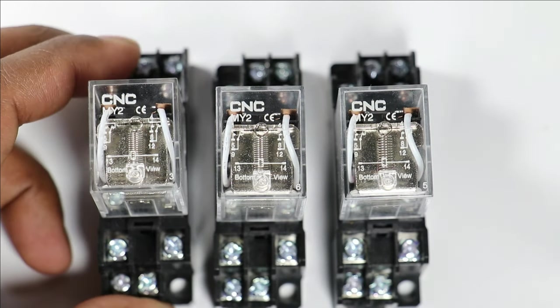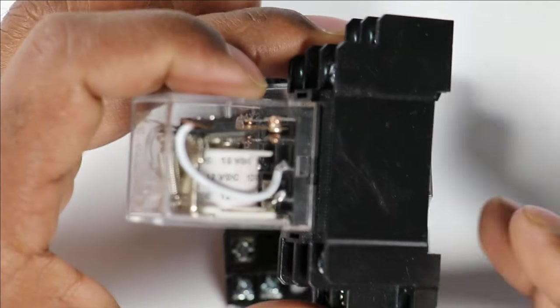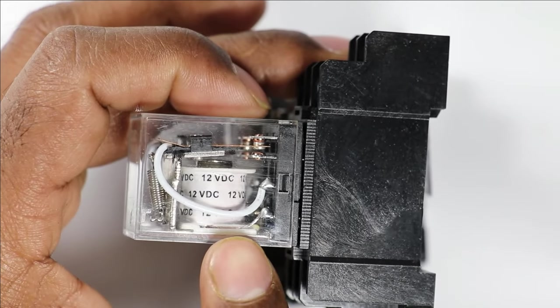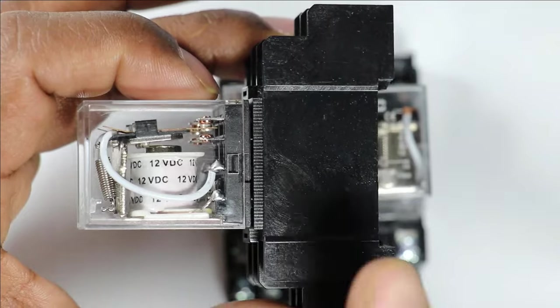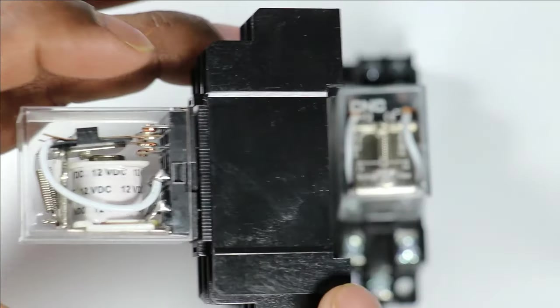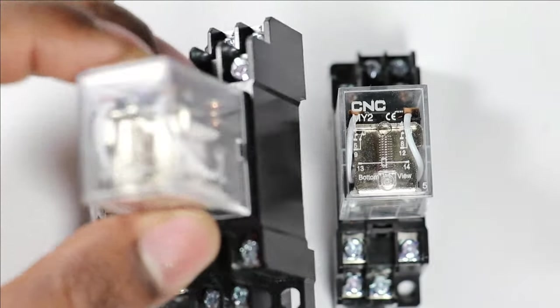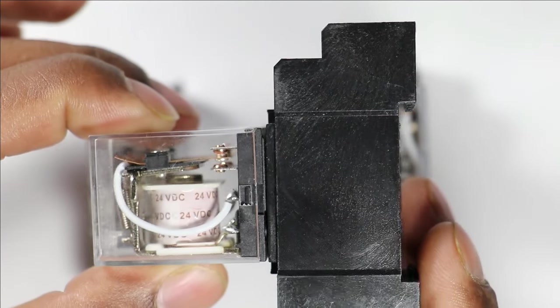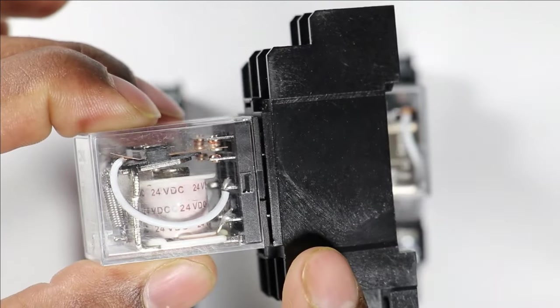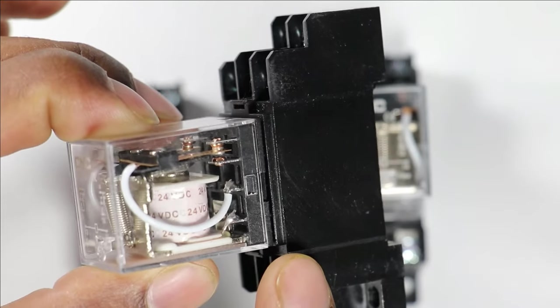If I take this relay and look closely to the coil part, you can see 12V DC is written here. This means 12V DC input voltage is required. On this second relay, 24V DC is written, which means to operate this relay 24V DC power supply is required.